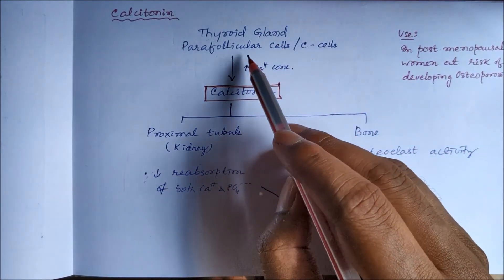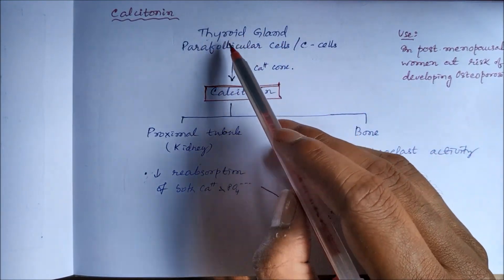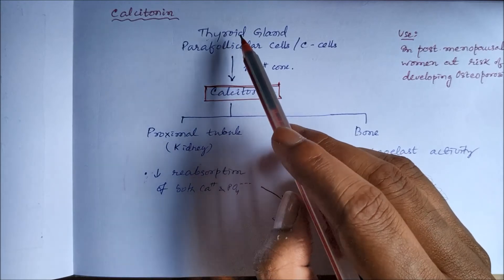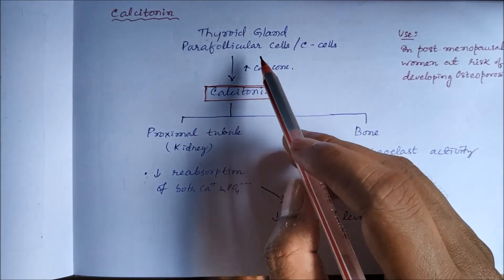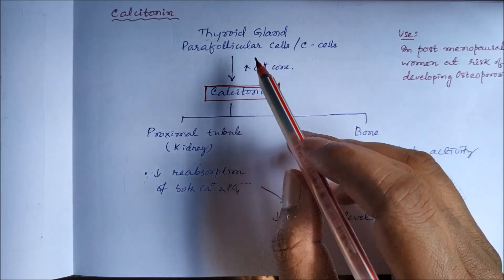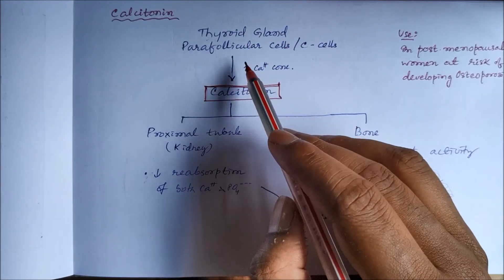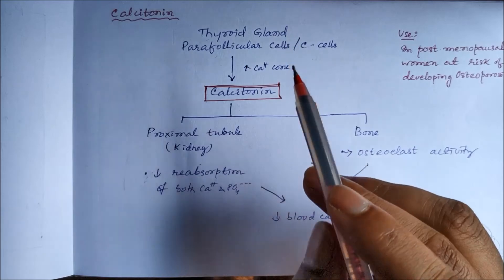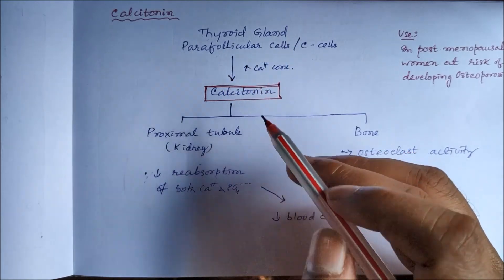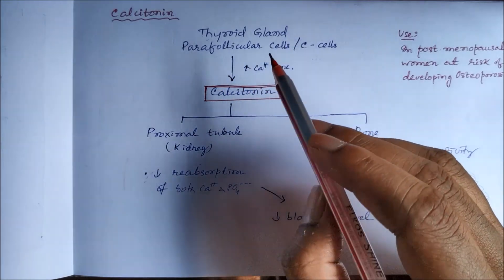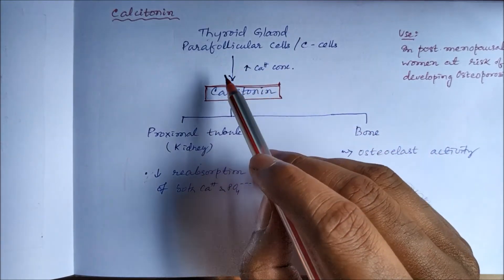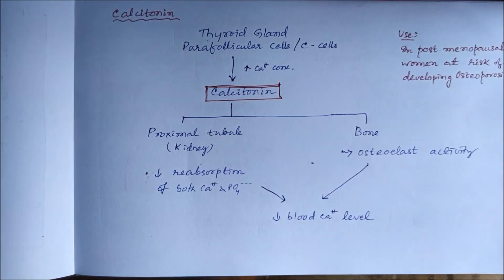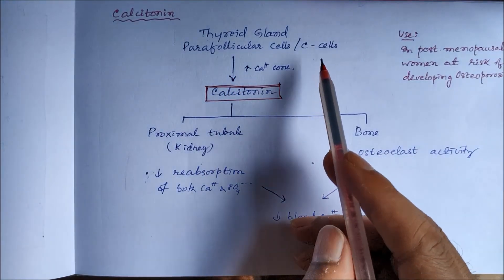Now for calcitonin. The thyroid gland has two types of cells: follicular cells and parafollicular cells. Follicular cells secrete thyroid hormones like thyroxine and triiodothyronine, whereas parafollicular cells — also called C cells — secrete calcitonin.